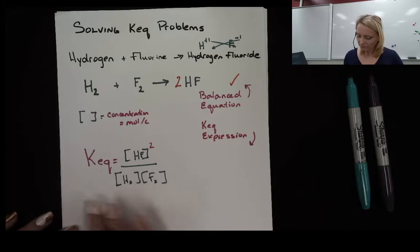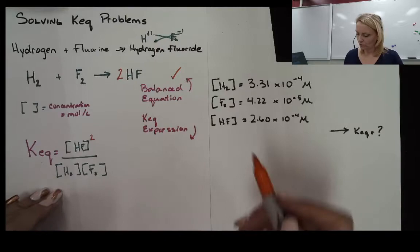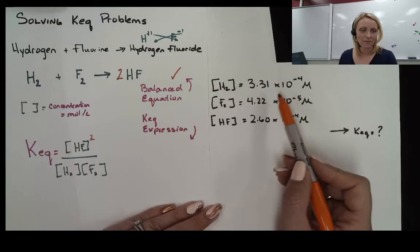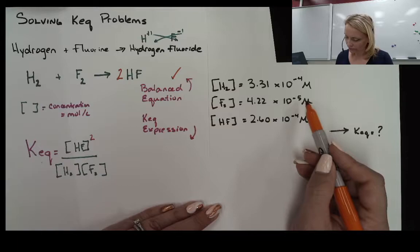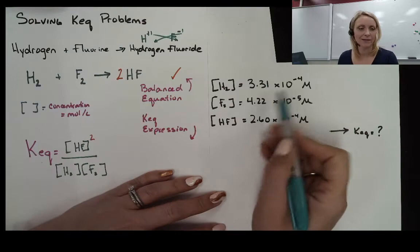So the first step in solving any KEQ problem is to write an equilibrium constant expression. Now I want to use this expression to solve a problem. The first problem we're going to solve is one where I give you the concentration of hydrogen in moles per liter — molarity is the shorthand for moles per liter — and also the concentration of fluorine and the concentration of hydrogen fluoride at equilibrium.